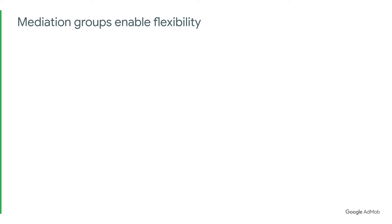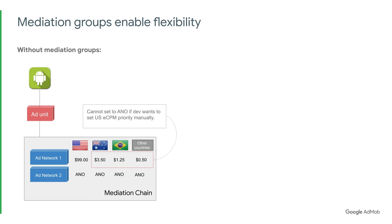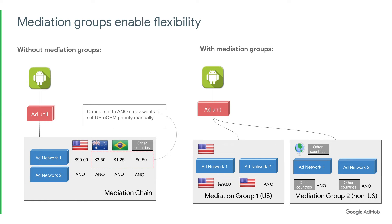Second, Mediation groups enable flexibility. Without Mediation groups, one waterfall needs to cover all geos and networks and you cannot create country-specific waterfalls. For example, as you can see on the left, if you want to give Network 1 first look in the US but not in other geos, you would have to manually set floors for each geo. In the example on the right, with Mediation groups, you can set up very flexible waterfall rules and create different waterfalls for different geos.